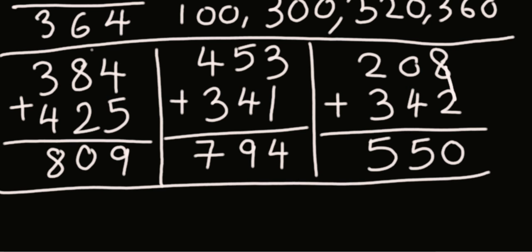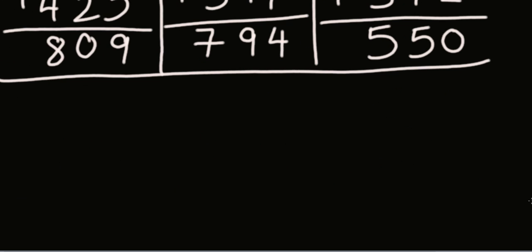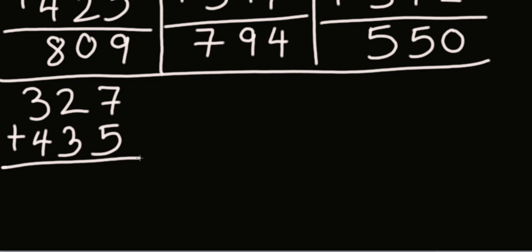Let's take one more example. And as you practice you will be able to do it faster because you will learn the tricks and the complements faster, and you will learn addition faster. So 327 plus 435: 300, 700, 720, 750, 757, 762.